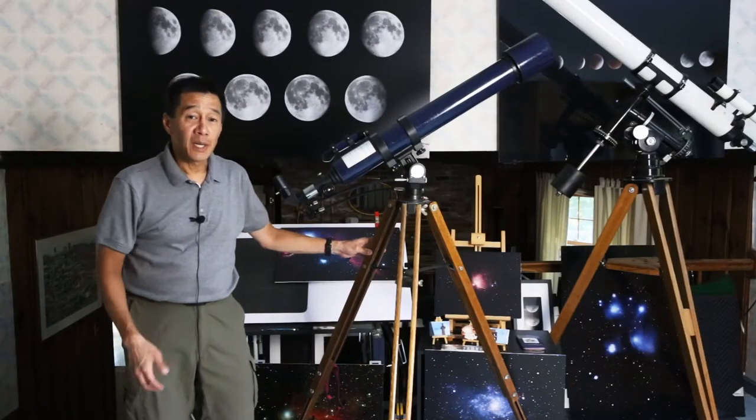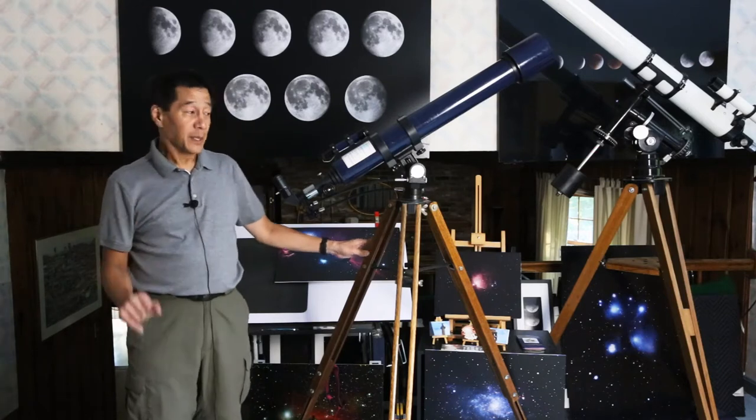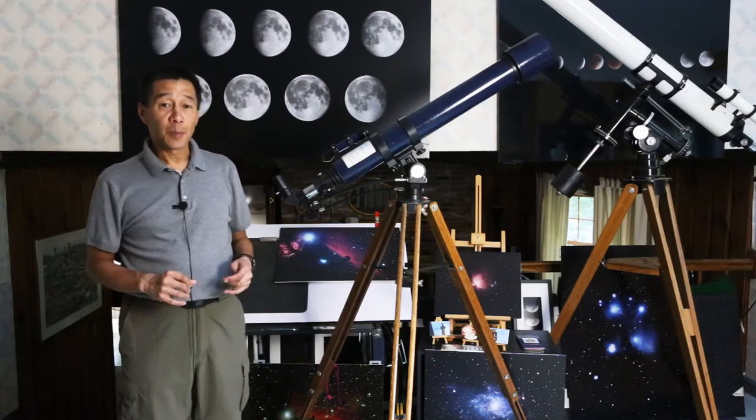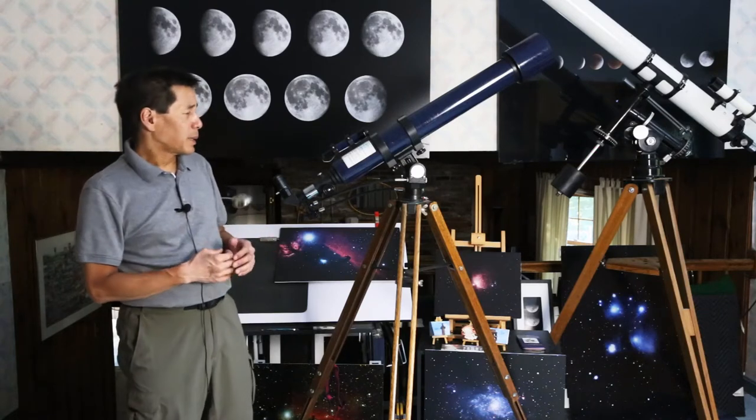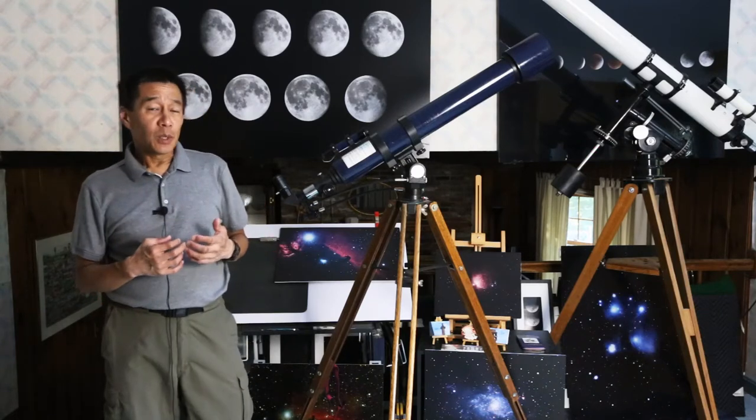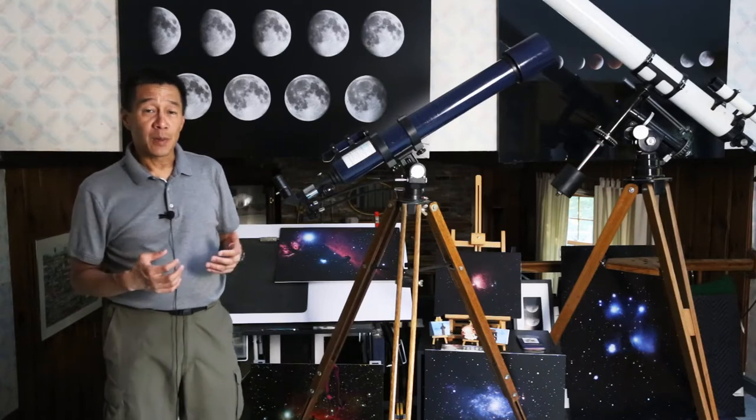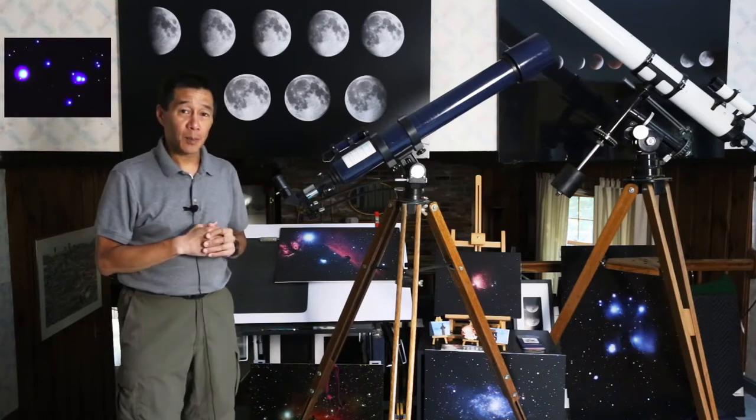The telescope has really nice optics. The star test is really, really good. And looking at the moon and Saturn and Jupiter, it's pretty hard to fault this telescope. On bright objects, you will see some chromatic aberration. That's that purple ring or halo around bright objects.